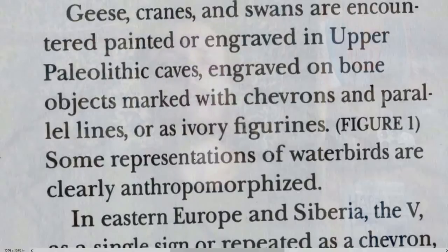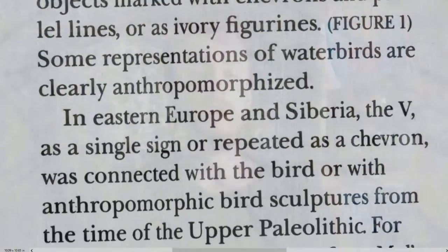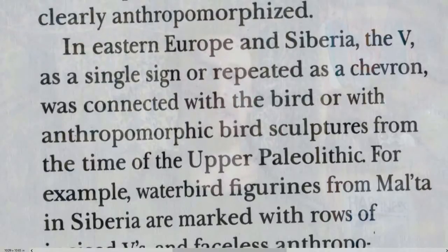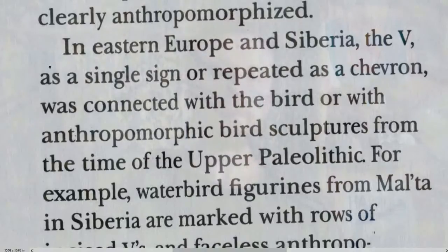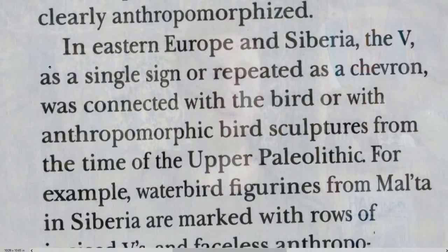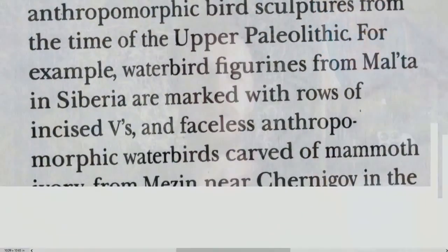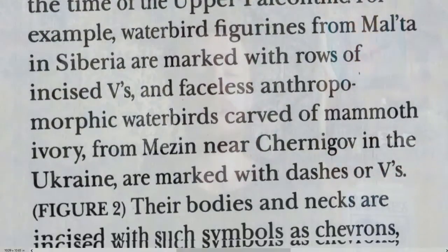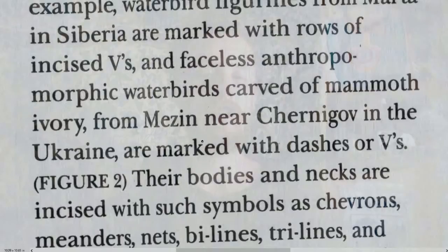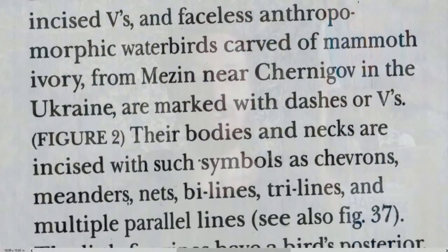Some representations of water birds are clearly anthropomorphized — bird and goddess in the same form. In Eastern Europe and Siberia, the V as a single sign or repeated as a chevron was connected with the bird or with anthropomorphic bird sculptures from the Upper Paleolithic. For example, water bird figurines from Malta in Siberia are marked with rows of incised V's, and faceless anthropomorphic water birds carved of mammoth ivory from Mzinn near Chanagrov in Ukraine are marked with dashes or V's.